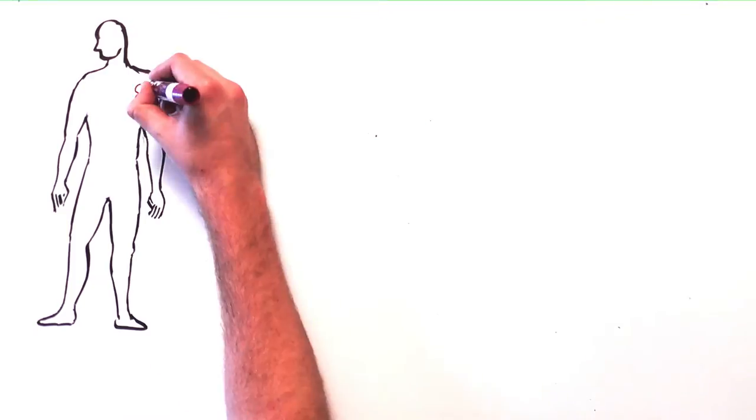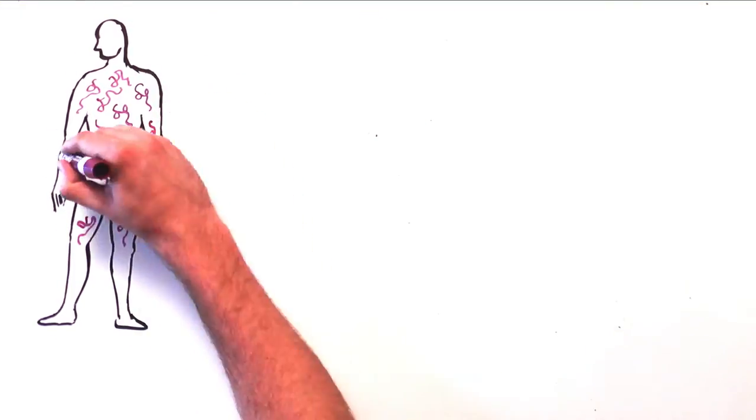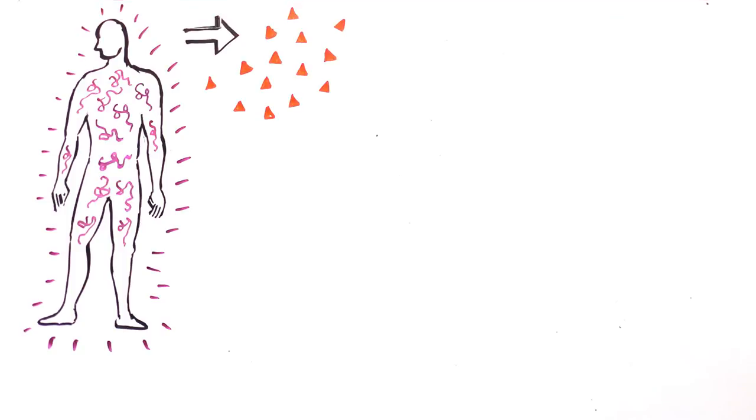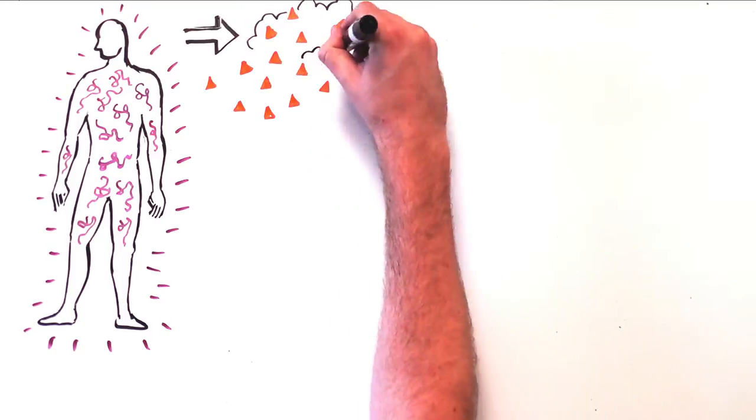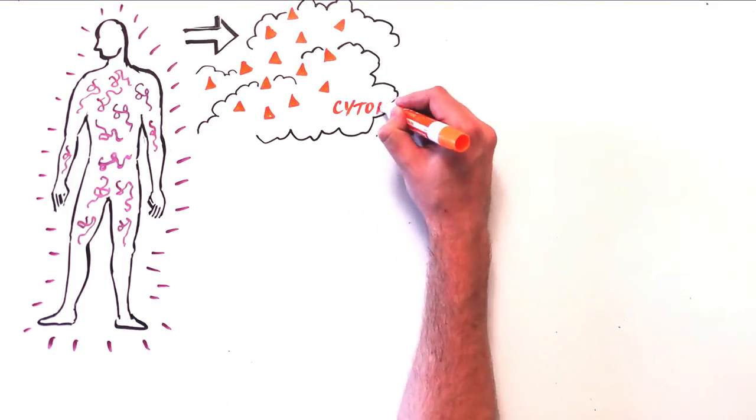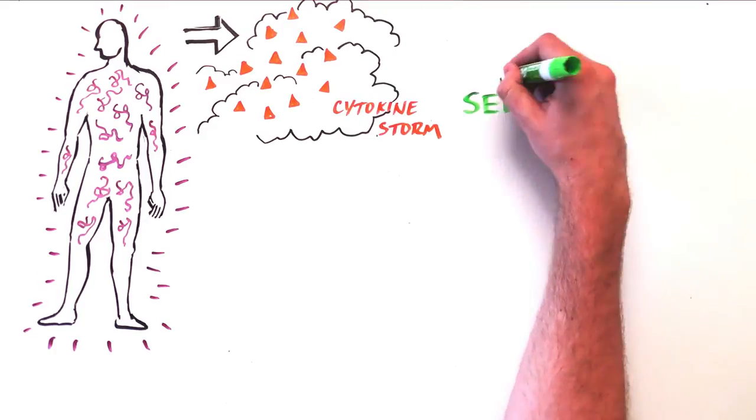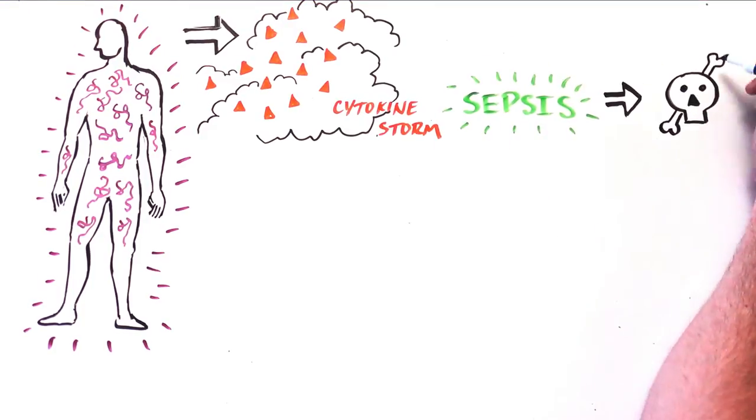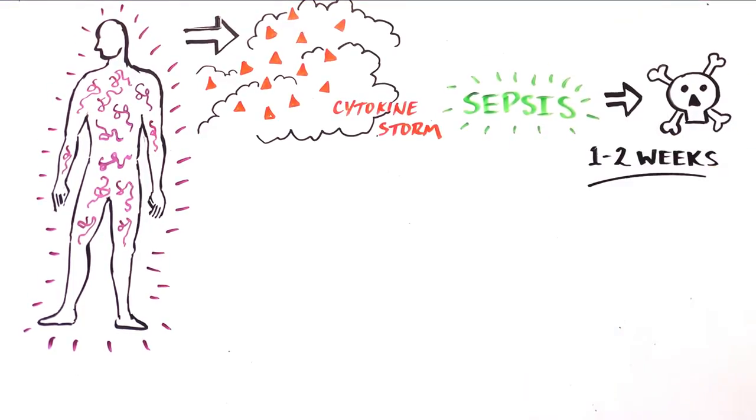Because the virus is present everywhere in the body, the body's immune system produces even more inflammatory factors, which leads to what we call a cytokine storm, followed by sepsis and sometimes death within a few weeks of infection.